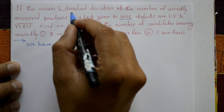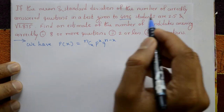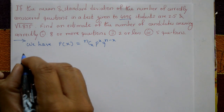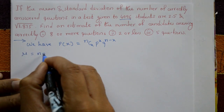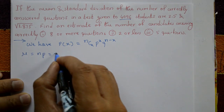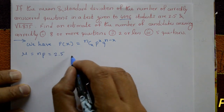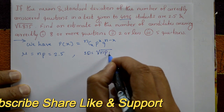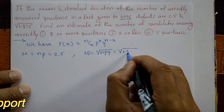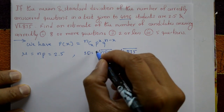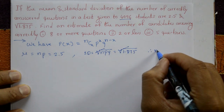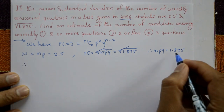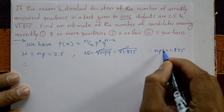The mean and standard deviation are given: mean μ = np = 2.5, and standard deviation = √(npq) = √1.875, so npq = 1.875.